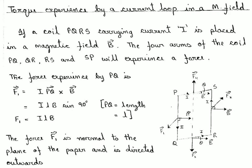The direction of F1 can be found using the right-hand vector product rule. With F1 = I(PQ vector) cross B vector, the fingers point in the direction of current flow from P to Q, then close towards B and extend the thumb. In this case, F1 is normal to the plane of the paper and directed outwards.